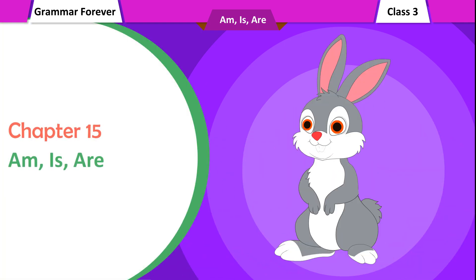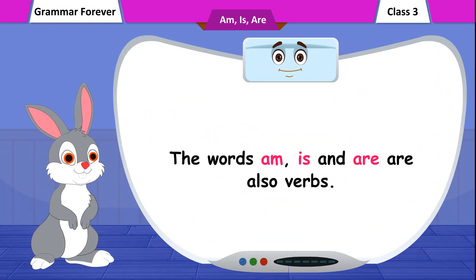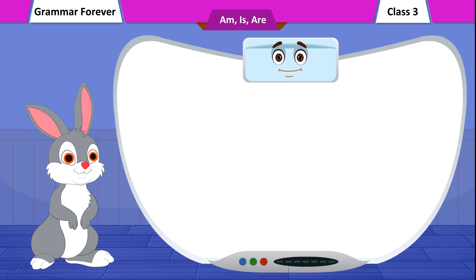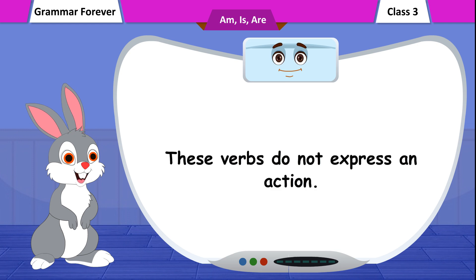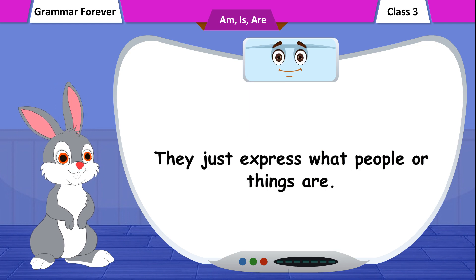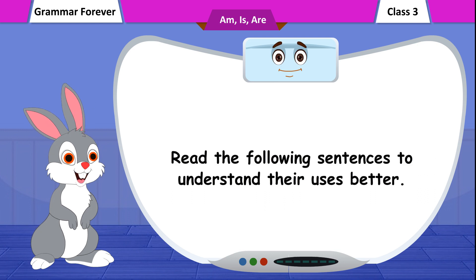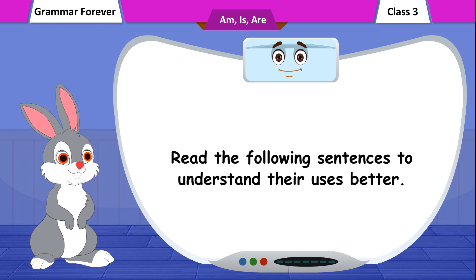Chapter 15: AM, IS, ARE. The words am, is, and are are also verbs. These verbs do not express an action. They just express what people or things are. Read the following sentences to understand their uses better.